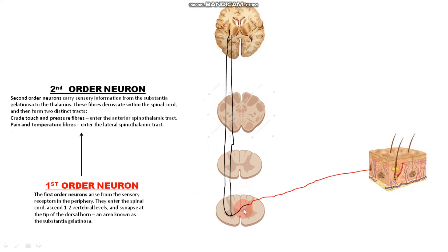If the sensory information is of pain and temperature from the first order neuron, then the second order neuron travels in the lateral side of the spinal cord and then synapses in the thalamus of the brain. If the second order neuron travels through the anterior side, it is known as the anterior spinothalamic tract; if it travels through the lateral side, it is known as the lateral spinothalamic tract. The anterior spinothalamic tract carries signals of crude touch and pressure, and the lateral spinothalamic tract carries signals of pain and temperature.